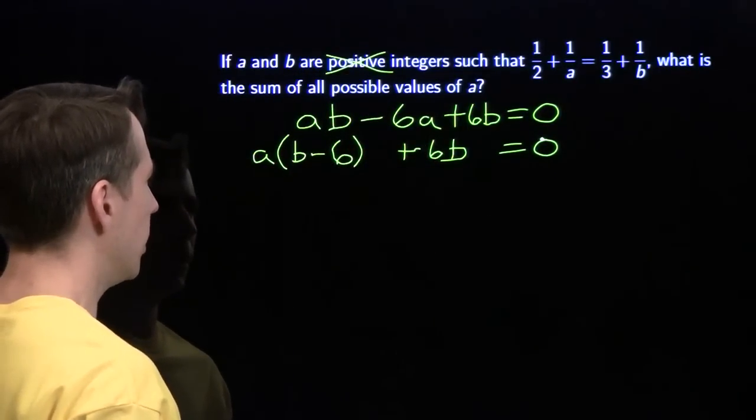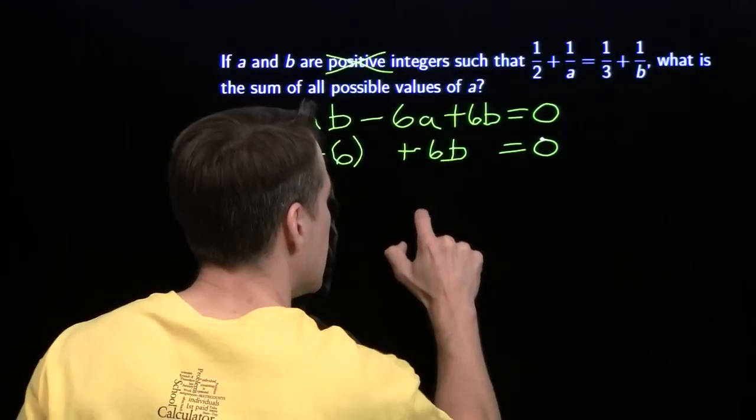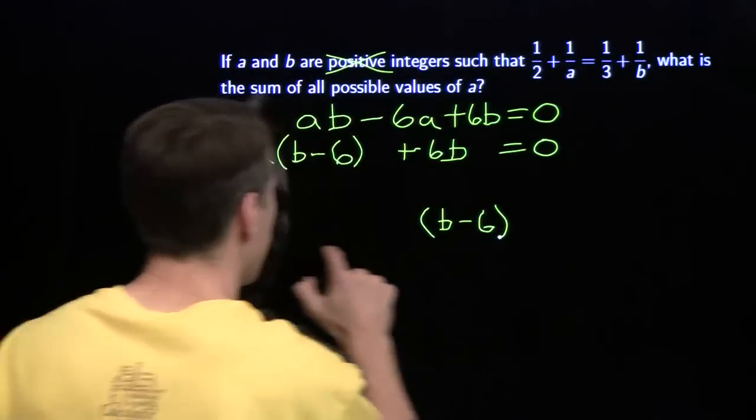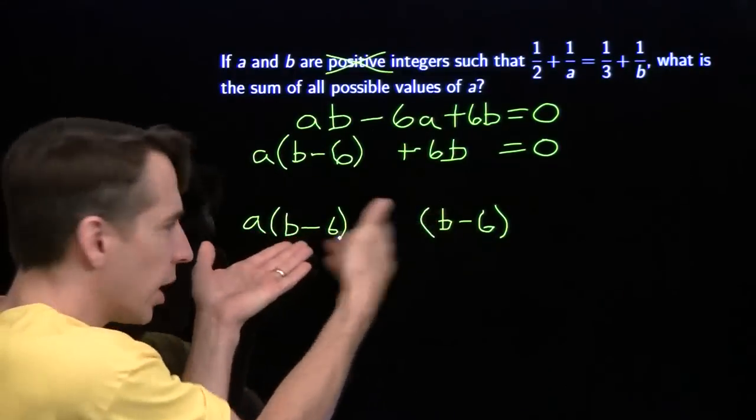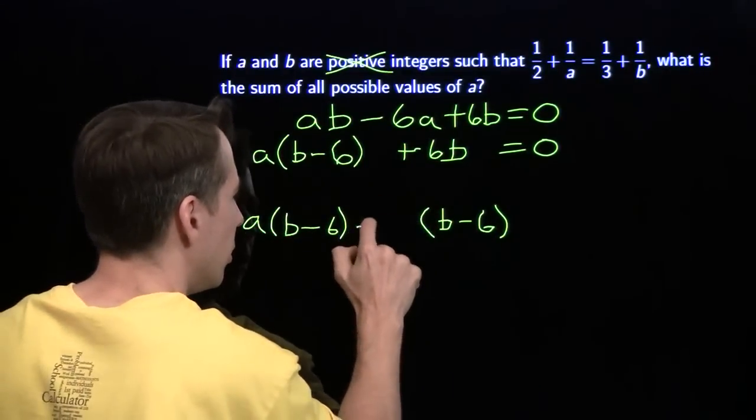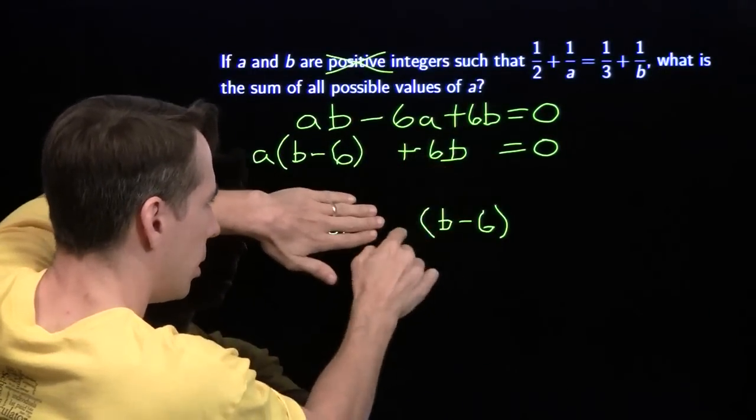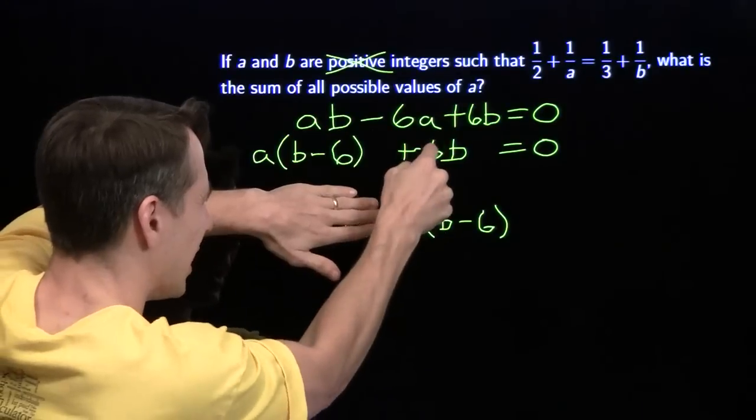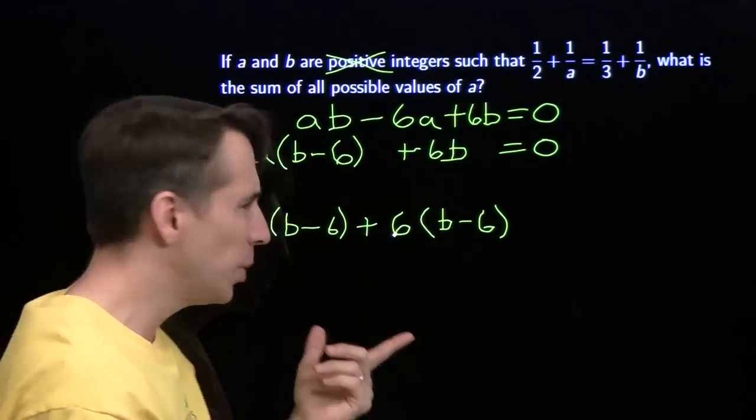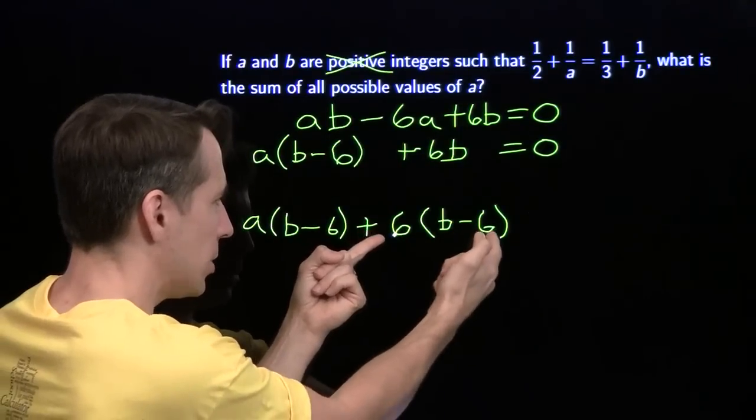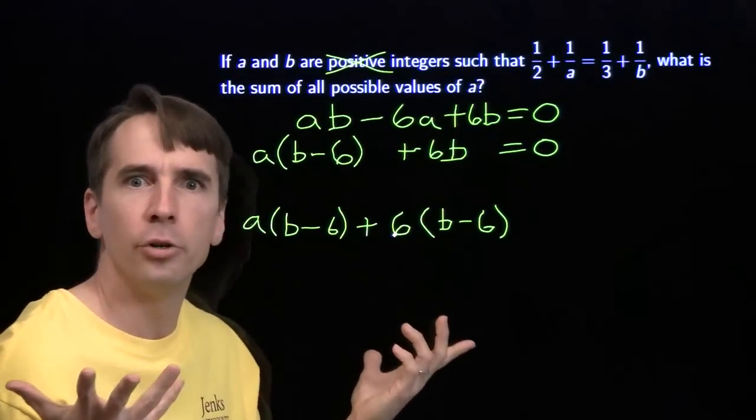What I'd really like is a b minus 6 over here somewhere. If I had a b minus 6 sitting over here, I could factor out the b minus 6 and we'd be good. But I don't have a b minus 6 over there. And I can't get just a b minus 6 because I had that 6 sitting there. I'm going to need a 6 times this minus 6. I need a minus 36 from somewhere. Well, I can introduce it. I can just subtract 36 from both sides.